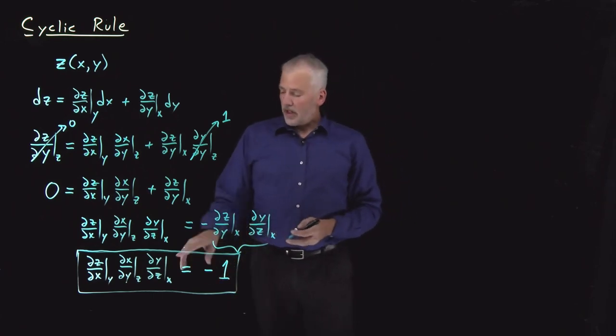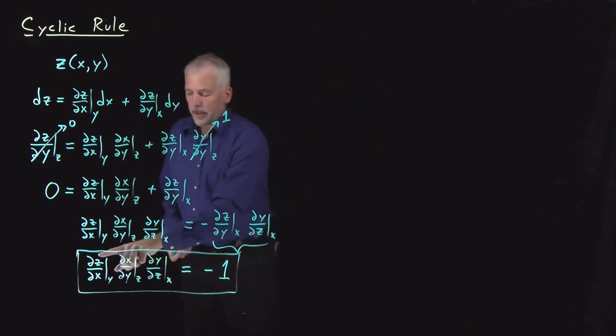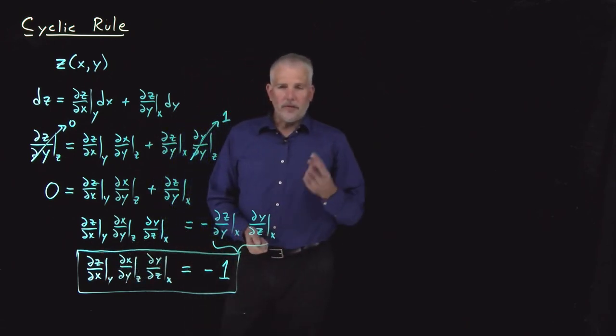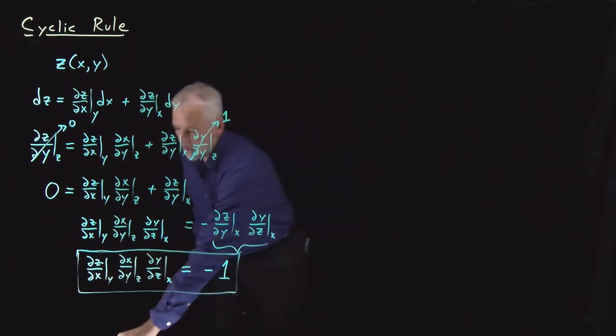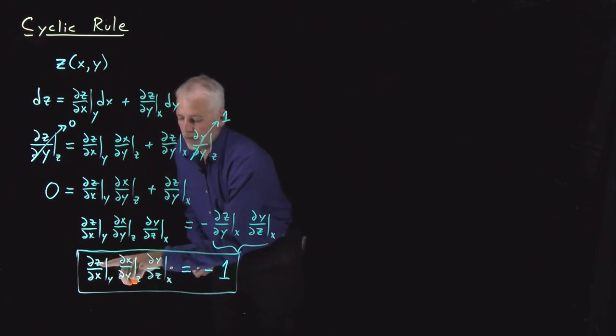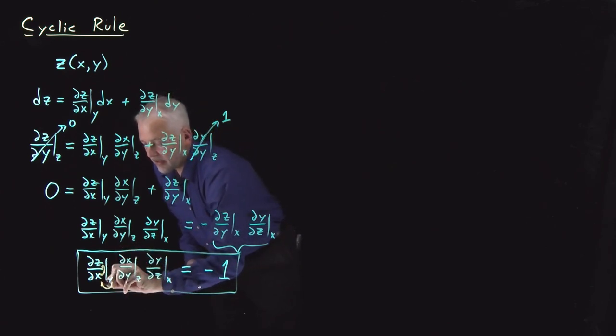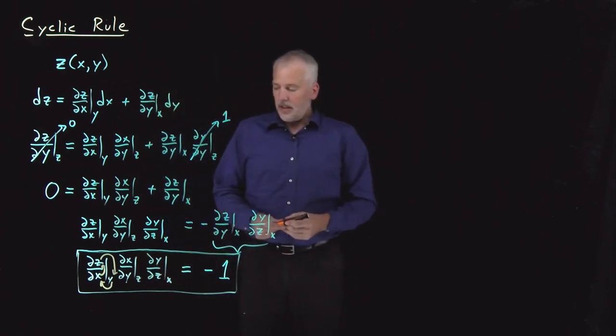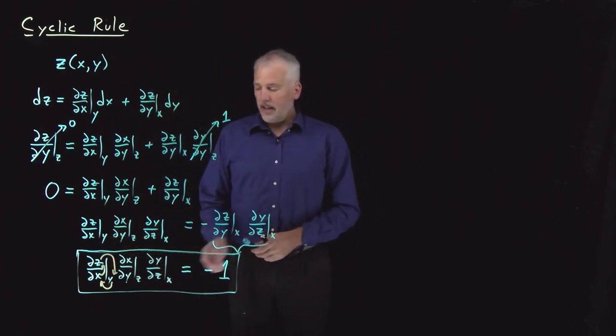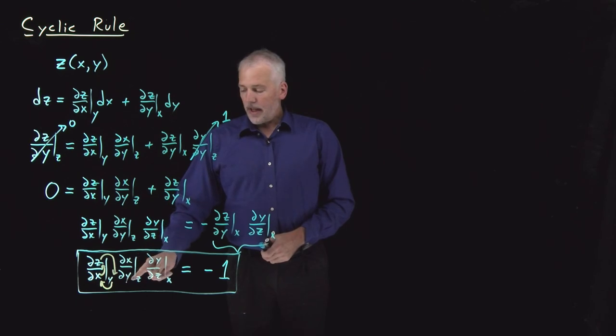The reason it's called the cyclic rule may also be clear. We have three different partial derivatives, each one involving an x and a y and a z. And all I do is, the first one looks like z with respect to x at constant y. If I move that x up to the numerator and the y to the denominator and the z around to being held constant, if I move them in a cycle like that, then I'll get ∂x/∂y at constant z.